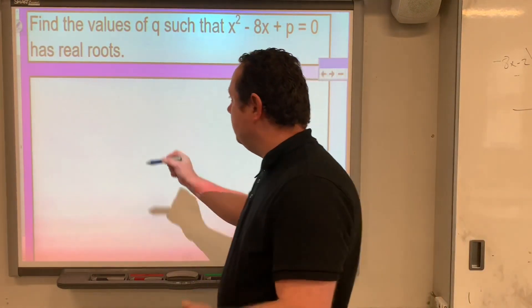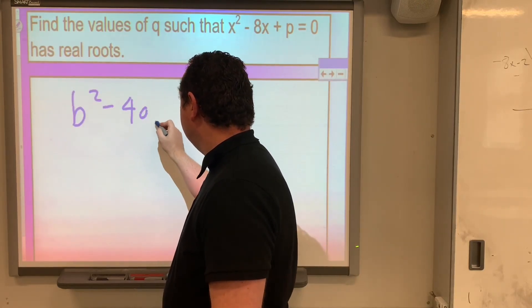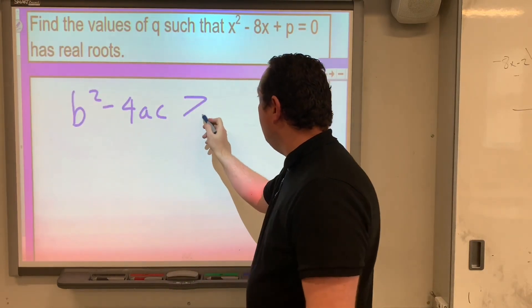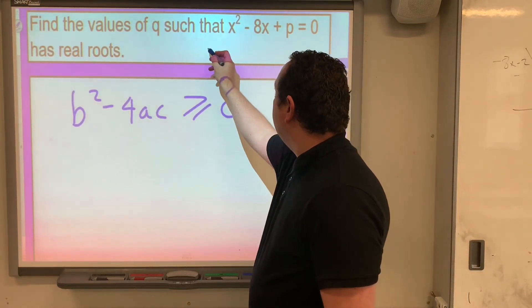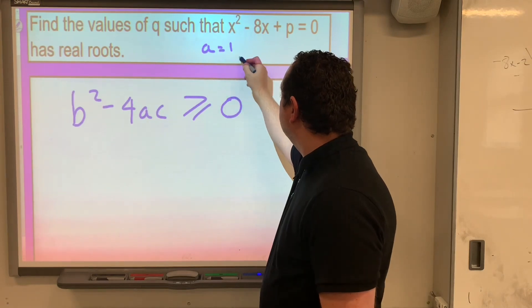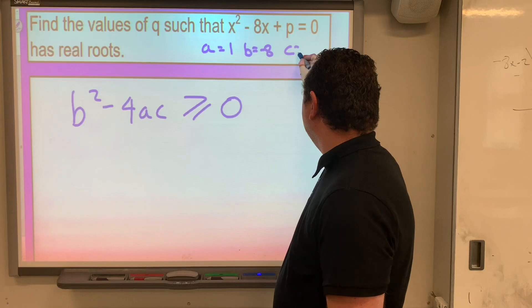So if it's got real roots, that means that b squared minus 4ac is greater than or equal to zero. So in this case, a equals 1, b equals minus 8, and c equals p.